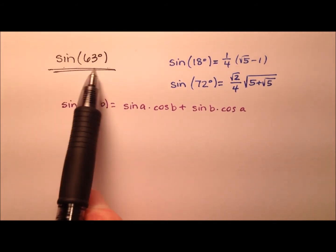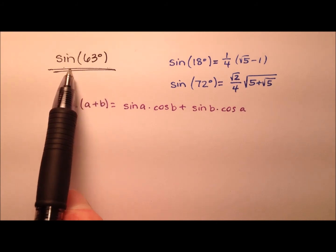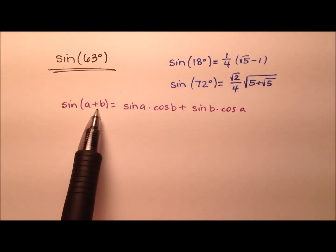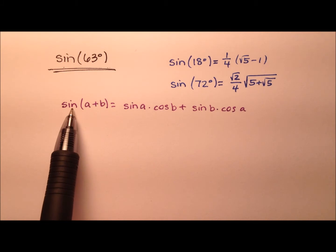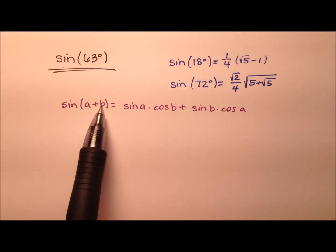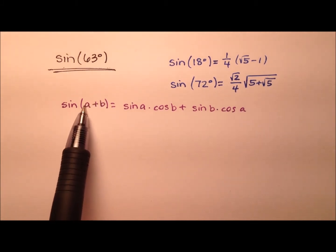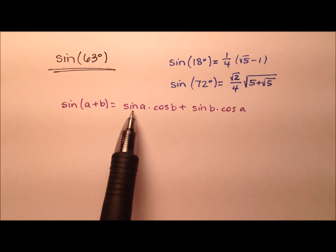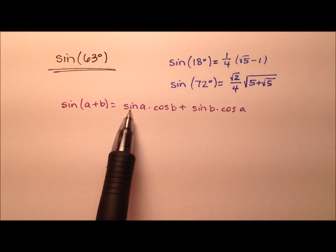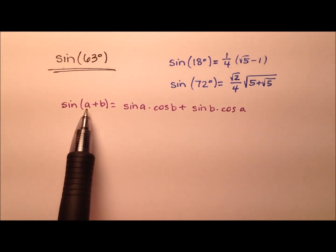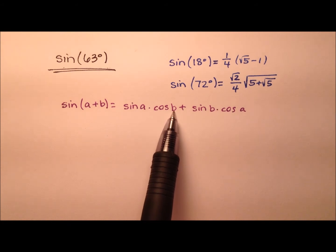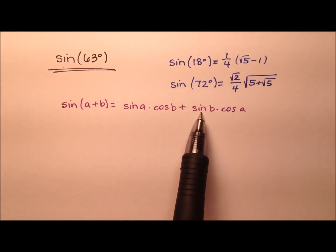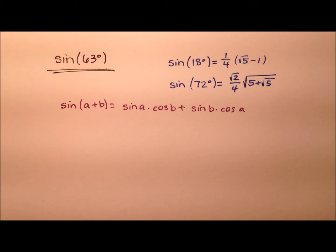We're going to find the value for the sine of 63 degrees by using our sum identity for sine, which says the sine of a plus b equals the sine of a times the cosine of b, plus the sine of b times the cosine of a.